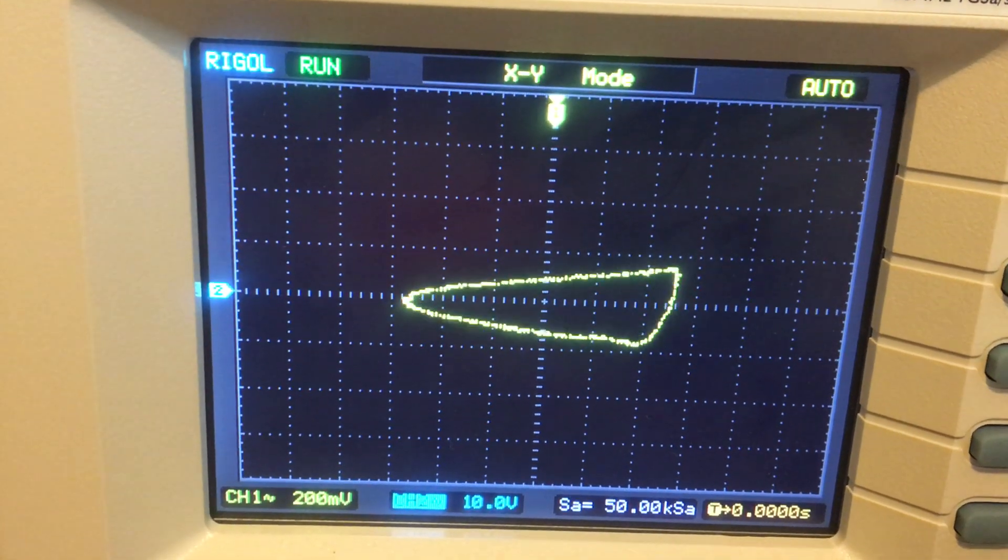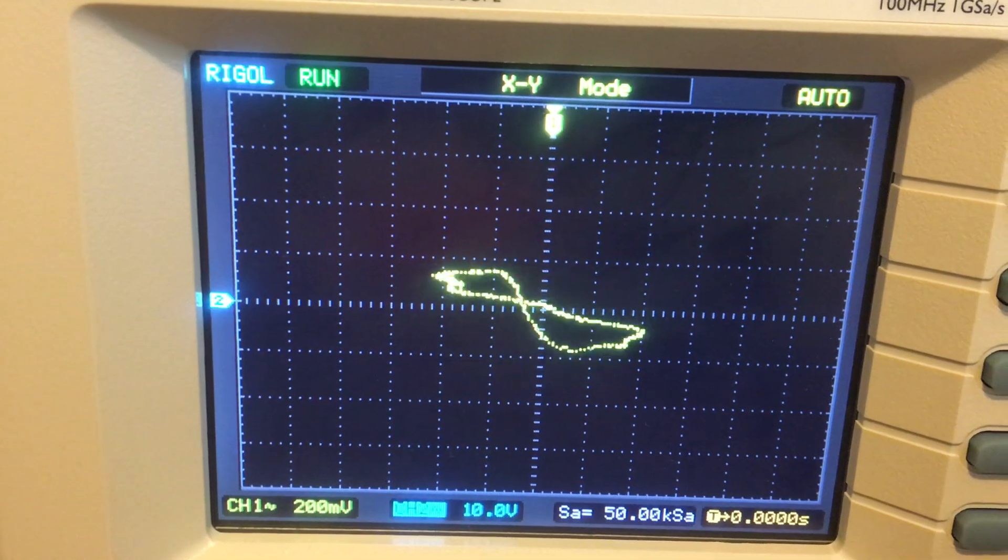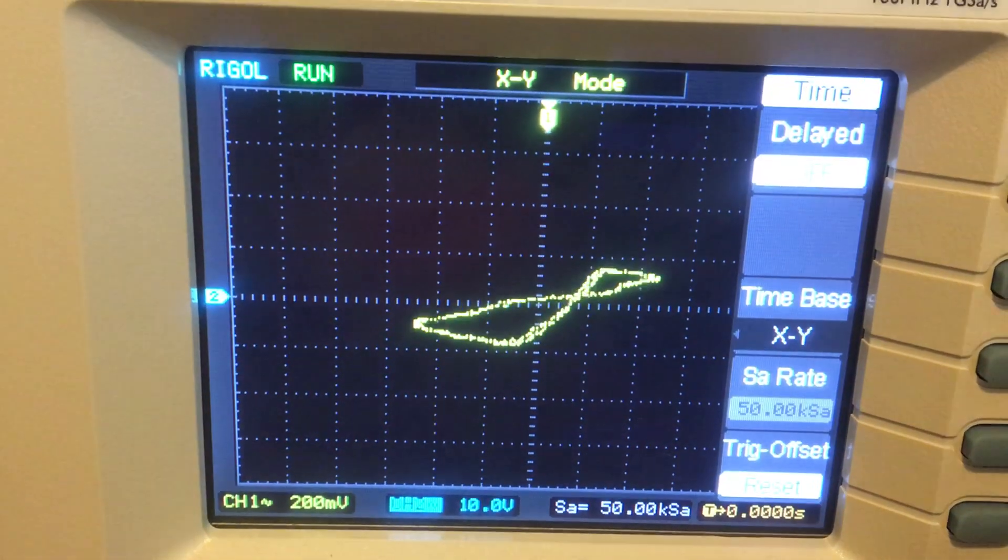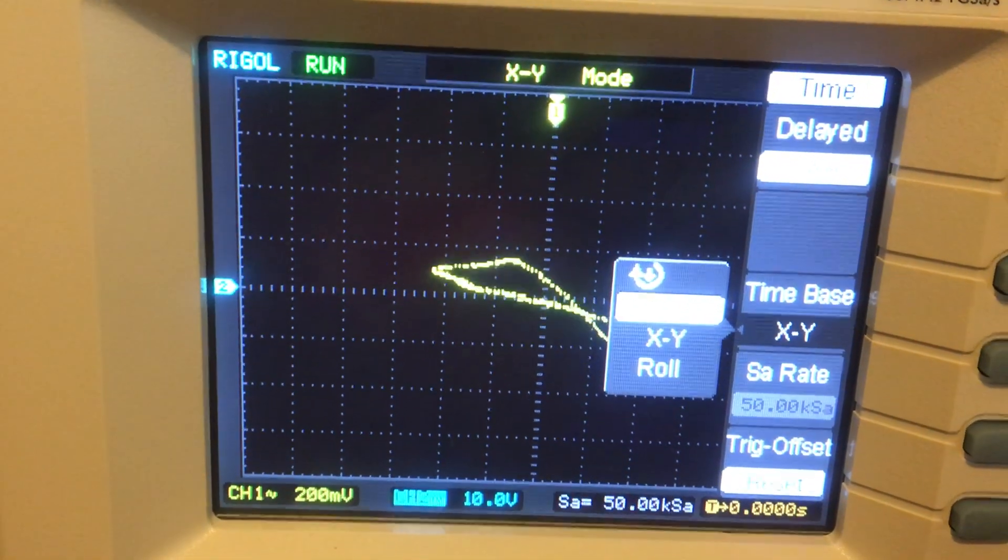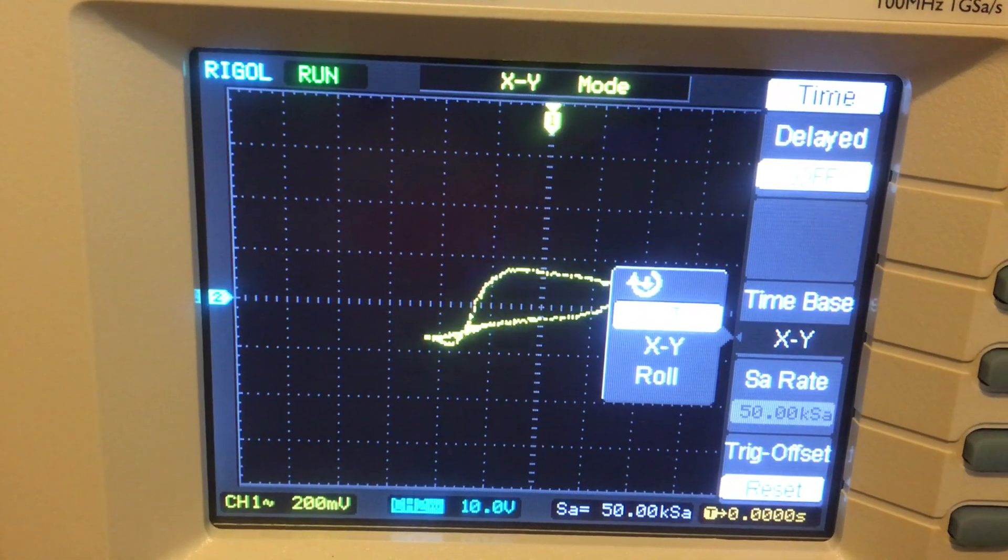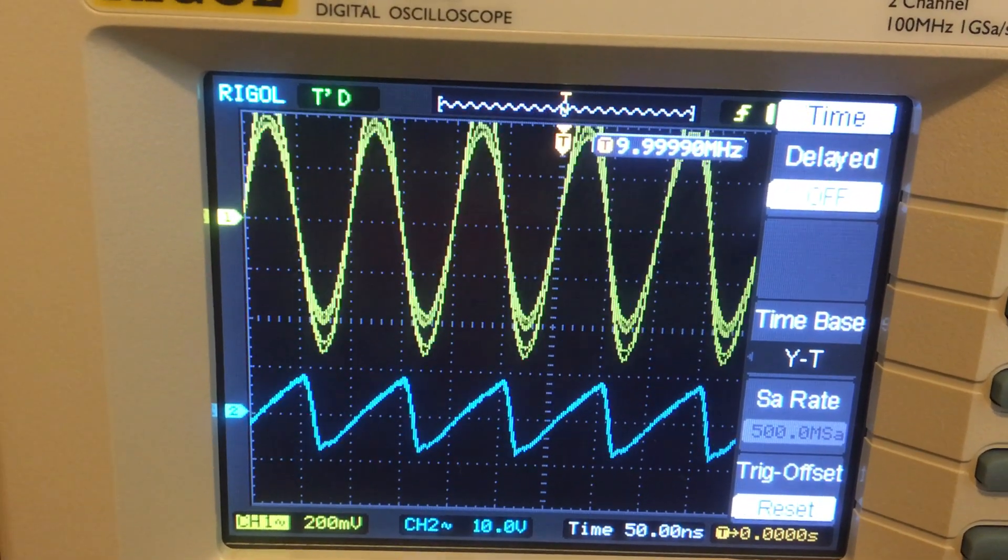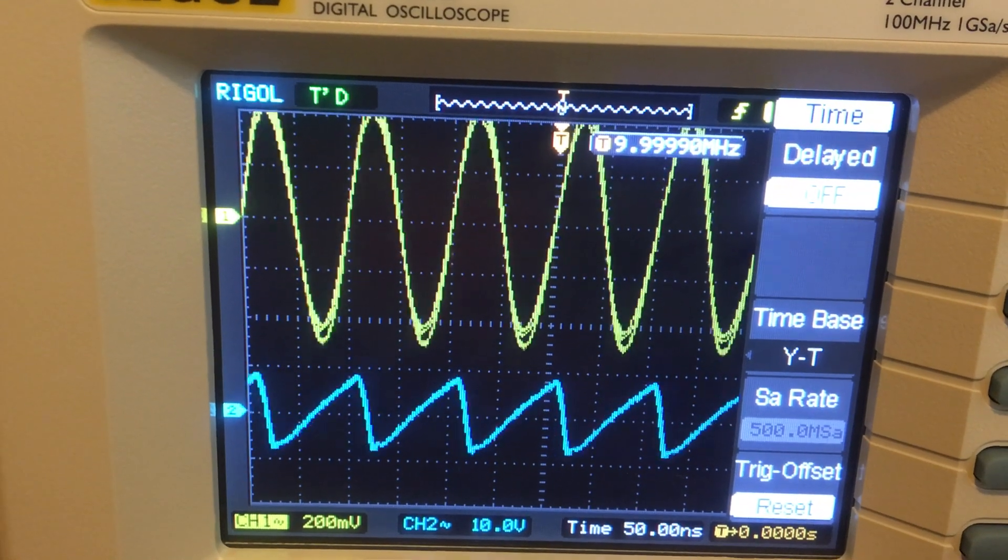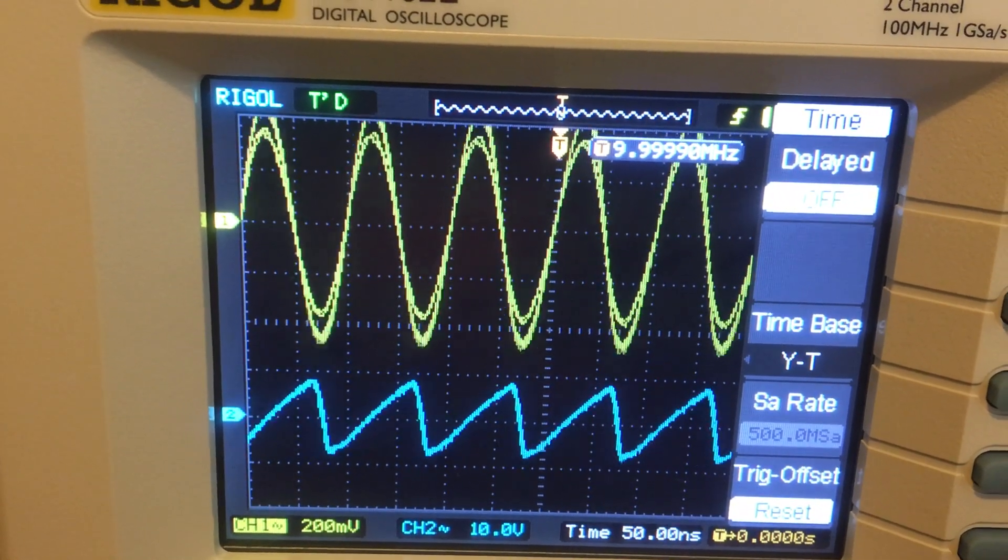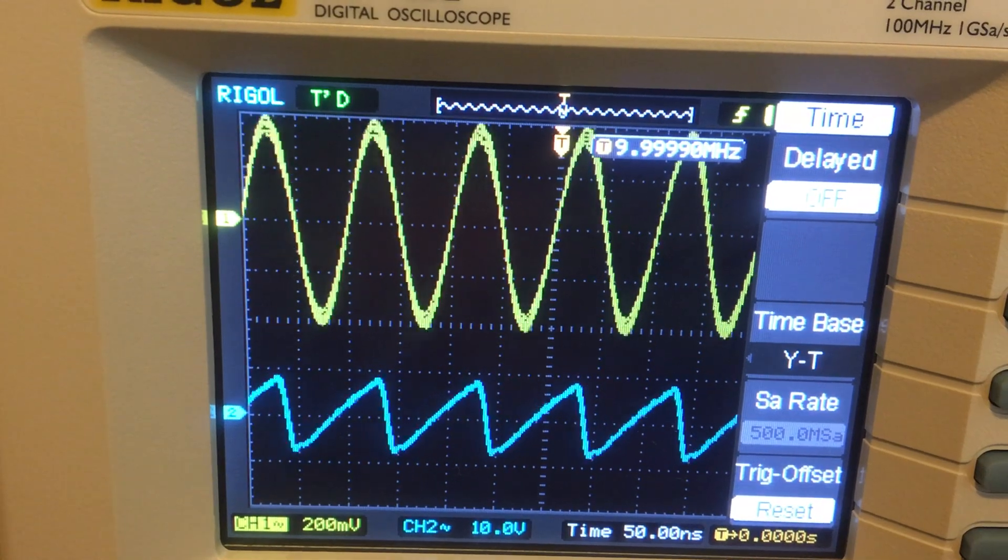And we'll go back to time-based mode here. There's the time-based mode. You can see the TCXO signal is a little bit lower in frequency than the WWV signal.